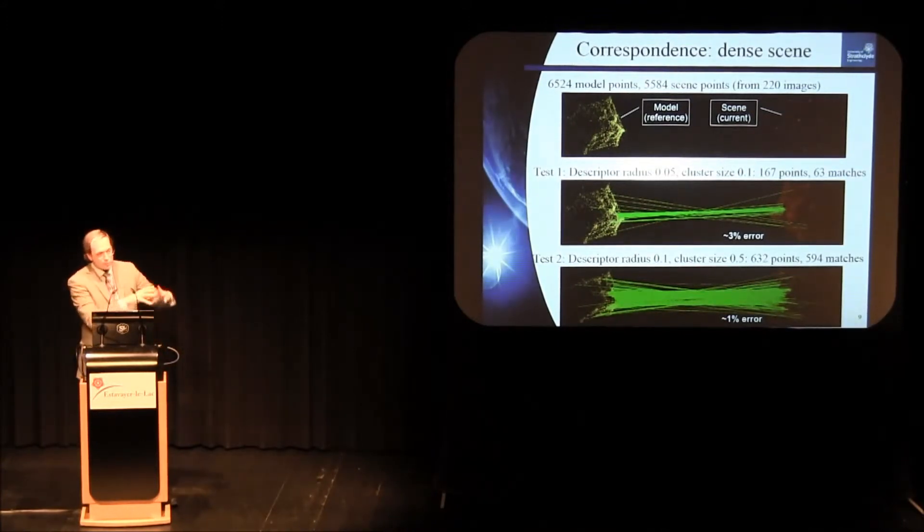If you double the descriptor radius, get more points in each keypoint descriptor, increase the cluster size, takes longer, but you can get 632 points, 594 matches, which actually gives you a very, very good estimate of where it is.